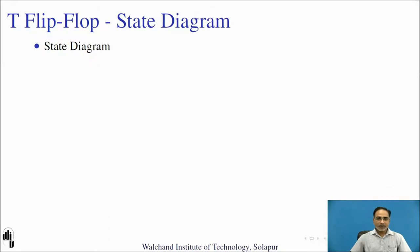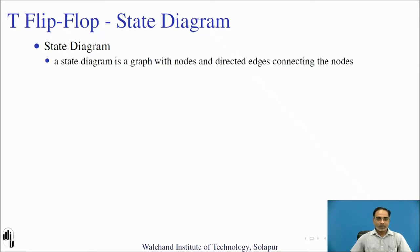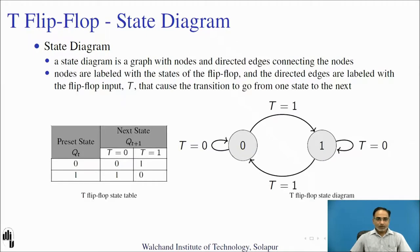Let us go to the next point — the state diagram. You can derive the state diagram with the help of the state table. A state diagram is a graph with nodes and directed edges. The edges are used for connecting different nodes. Nodes are labeled with the state of the flip-flop. Since a T flip-flop has two states — 0 and 1 — two circles or nodes are drawn, labeled with state values 0 and 1. The directed edges are labeled with the flip-flop inputs, and these inputs cause the transition from one state to another state.